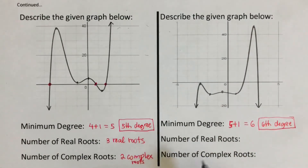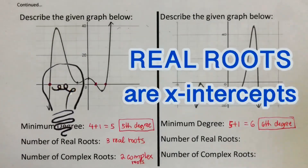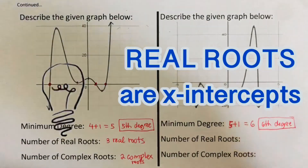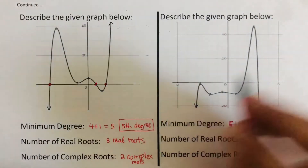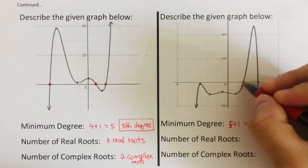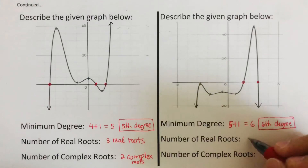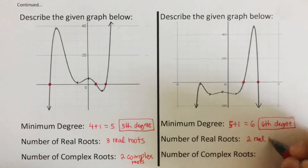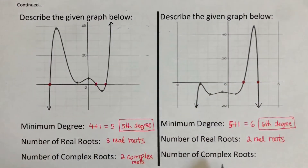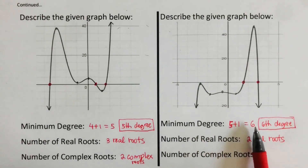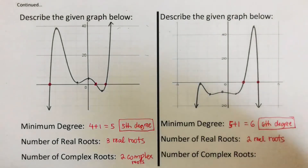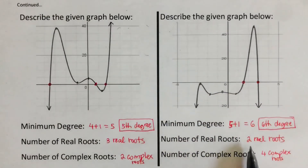Now let's determine the number of real roots. Real roots are the x-intercepts. One portion of the graph is not touching the x-axis, so we have two real roots. To find the complex roots, we subtract the real roots from the minimum degree: six minus two equals four complex roots. Two plus four equals six.